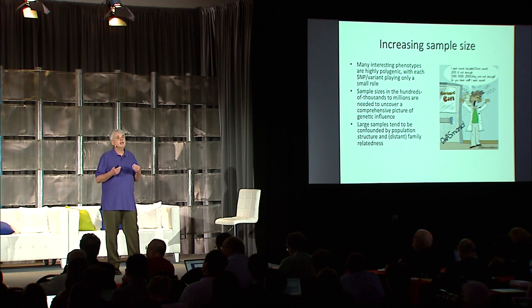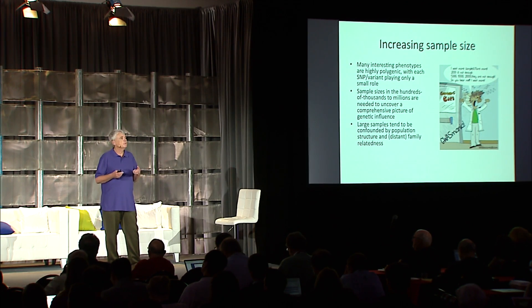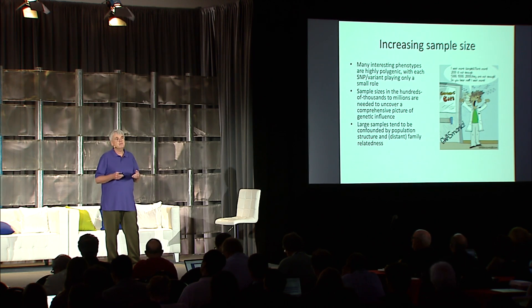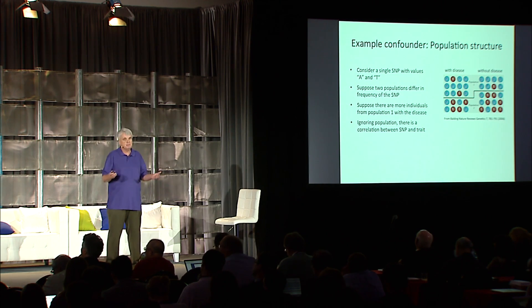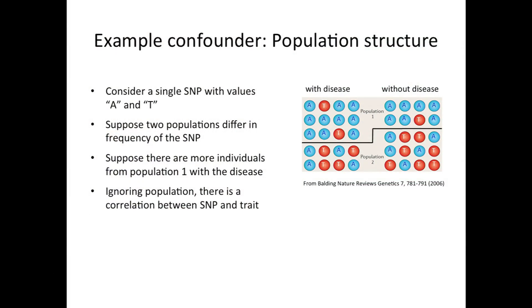When you have these large data sets, you tend to get more and more confounding. Examples include confounding due to family relatedness, and another good example is confounding due to population structure. Let me briefly describe population structure. This is a very simple example — we're looking at one SNP here, and we're asking the question: is this SNP correlated with having the disease or not?